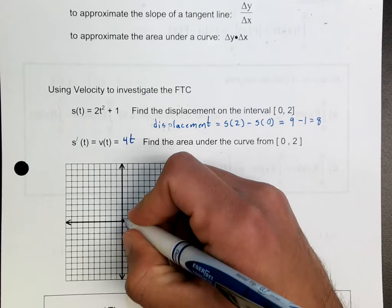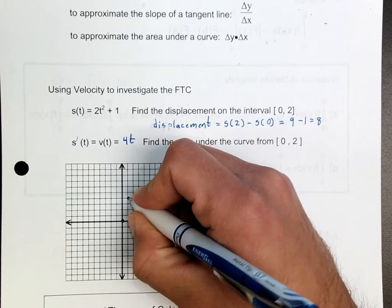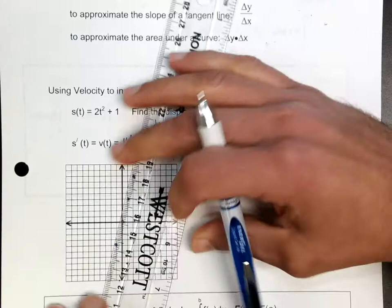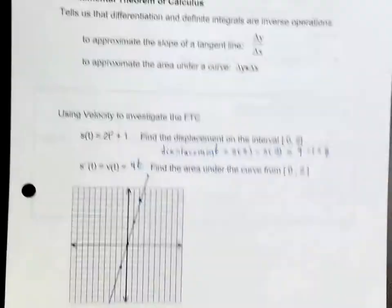So our x-y intercept is at 0, and I'm going up 4 over 1, then up 4 over 1 again. Let me do one more point here. Okay, so we have that line right there.